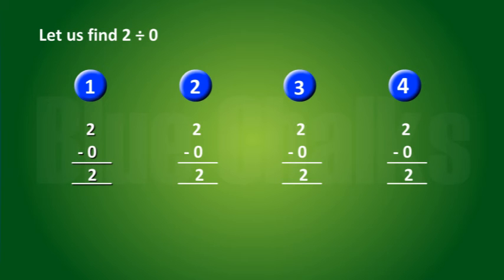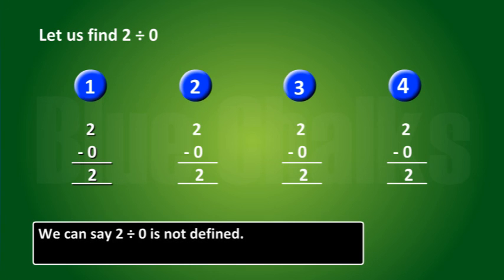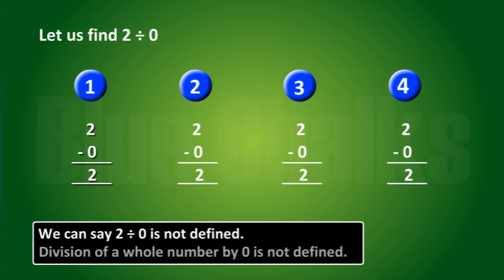In every move we get 2 again. We never get 0 at any stage of subtraction. This process will never stop. We can say 2 divided by 0 is not defined. Division of a whole number by 0 is not defined.